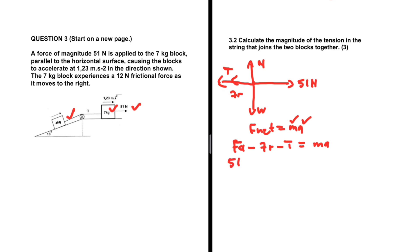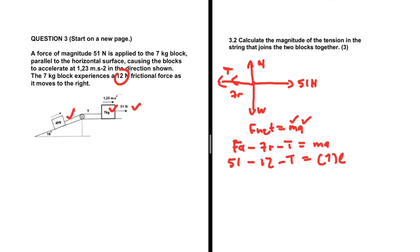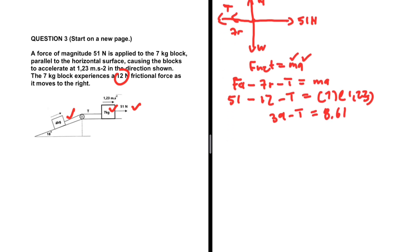Force applied is 51 newtons and the frictional force is given as 12 newtons. So: 51 minus 12 minus tension equals the mass 7 kg multiplied by the acceleration 1.23. So 51 minus 12 is 39; we have 39 minus tension equals 7 multiplied by 1.23, which gives 8.61. So minus tension equals 8.61 minus 39, that is minus 30.39. Dividing both sides by minus 1, the tension equals 30.39 newtons.